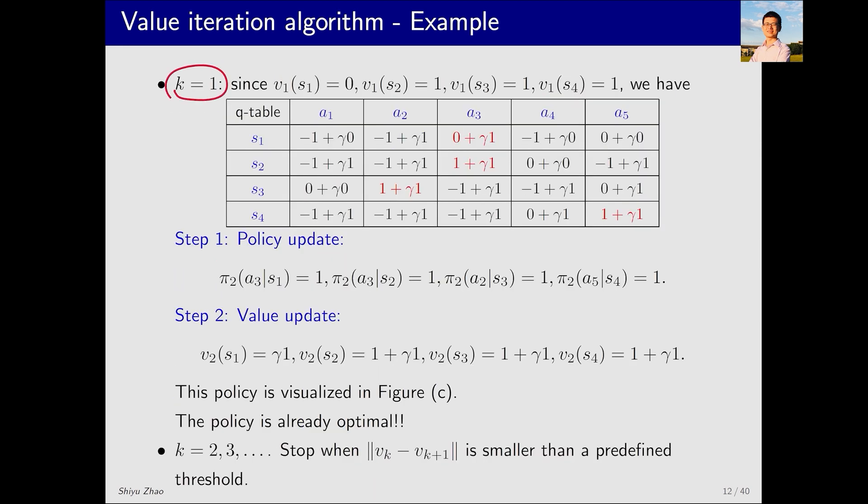At k equals 1, the previous iteration gives us the value of v_1. We substitute these values back into the q-table, resulting in a new q-table. Then, immediately, for each state, we can see which q-value is the largest. This q-value is the largest, so its new policy is to choose a_3, and its new value is this. The new policy a_3, the new policy a_2, and then the new value is this value. The new policy is a_5, and the new value is this value. These are the two steps.